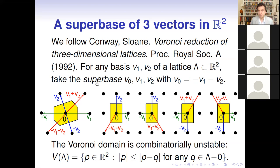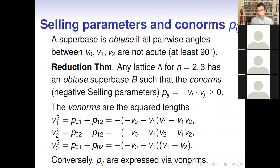We consider not an arbitrary super base, but one which is obtuse: all pairwise angles between the vectors are at least 90 degrees. This restriction reduces the number of potential super bases. Importantly, in dimensions two and three, any lattice has an obtuse super base, so any basis can be reduced to this super base form.